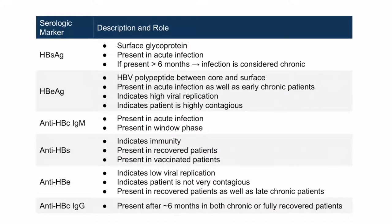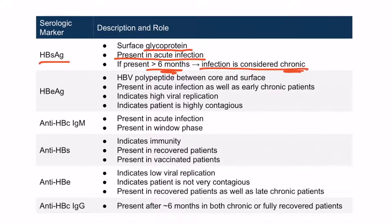This table describes the details of each antigen as well as the antibodies the body forms against those antigens. Starting with the surface antigen, it is important to know that it is detectable in an acute infection and it is a glycoprotein. If it is present for longer than six months, the infection is considered a chronic infection.